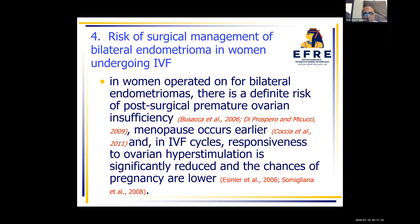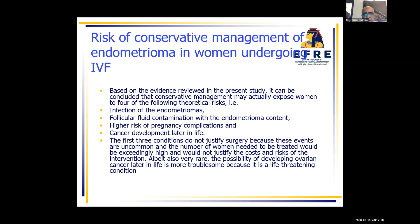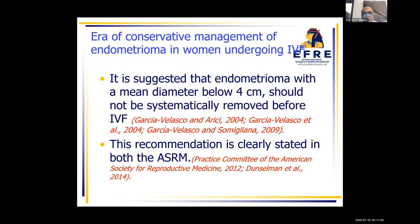In women operated for bilateral endometrioma, there is a risk of more diminishing of ovarian reserve, although the data does not support this idea. Based on the evidence reviewed, conservative management may expose women to four theoretical risks: infection, follicular fluid contamination, high risk of pregnancy complication, and cancer — the first three being very low instances. So we are apparently in an era of conservative management, and it is suggested that endometrioma with a mean diameter below 4 cm should not be systematically removed. This is the recommendation of ASRM and ESHRE.